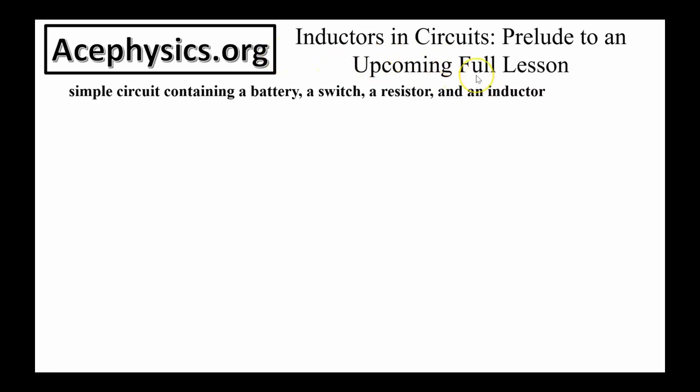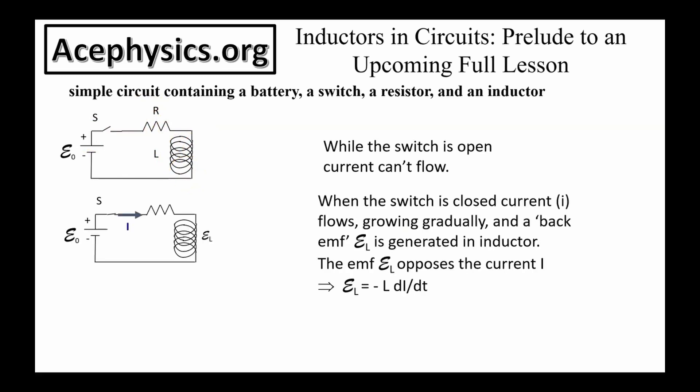Inductors and circuits. This is a prelude to an upcoming lesson. This is an RL circuit with a battery, a resistor, and an inductor. While the switch is open, current can't flow. When the switch is closed, current flows, growing gradually, and a back EMF is generated in the inductor. After a long time, the current becomes steady and the back EMF becomes zero.